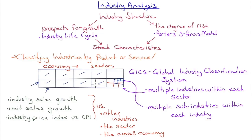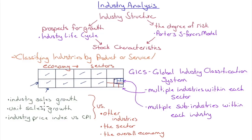We can look at industry sales growth, unit sales growth, or industry price index versus CPI and versus the overall economy. However, in reality this kind of research is difficult unless your organization has a well-funded research department, since a lot of this information — especially at the industry and sub-industry level — is developed by research firms who sell it. Still, there are many ways to work with industry classification by product or service.